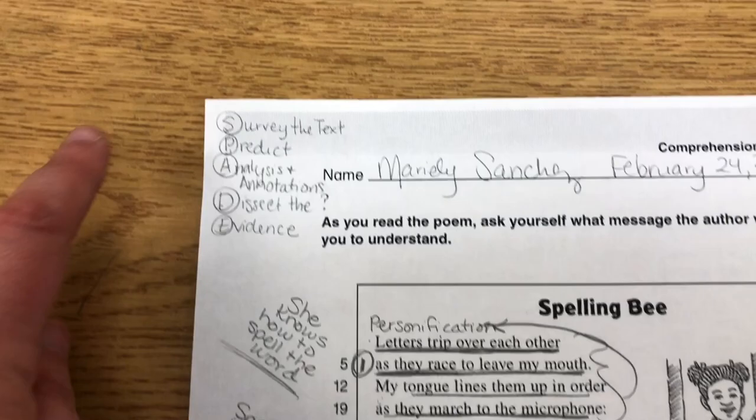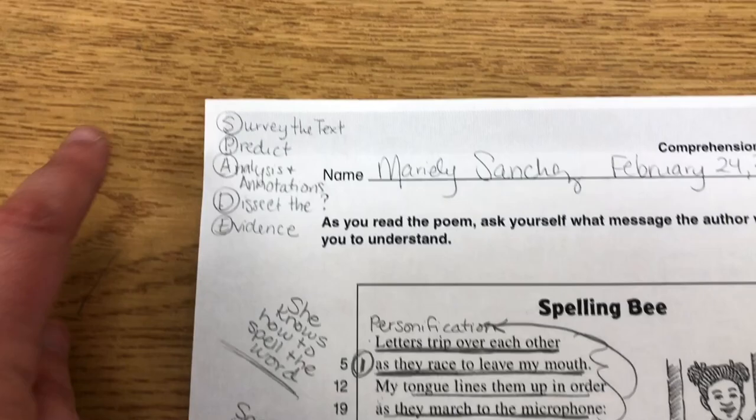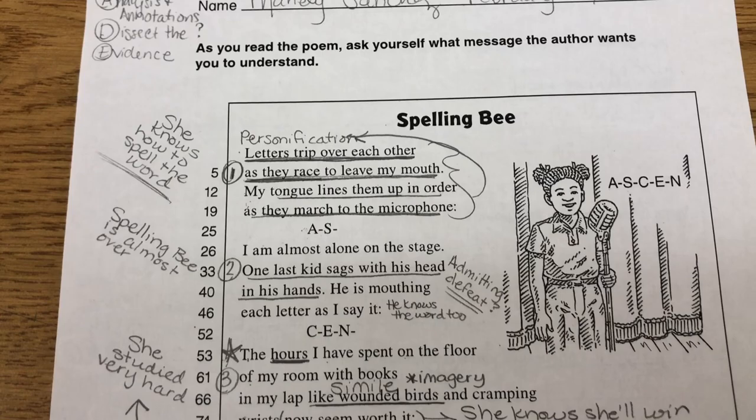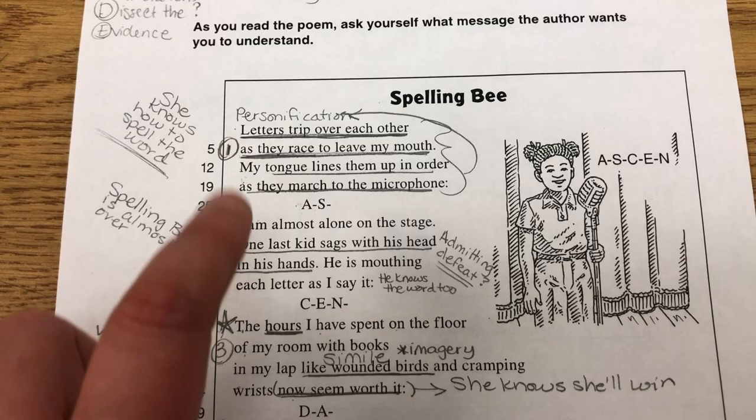Here is the spelling bee passage so that we can see how we dissected the entire poem. We did go through our whole entire SPADE strategy, which is a reading comprehension strategy that we use in our district. And after we read the poem one time, we went stanza by stanza to really ask ourselves what was happening.